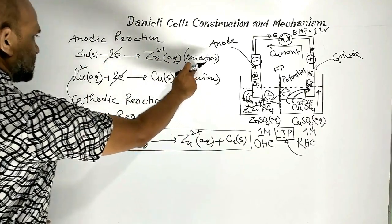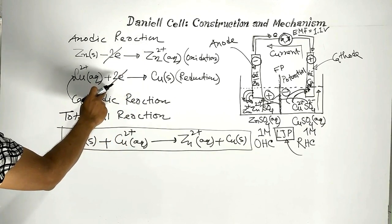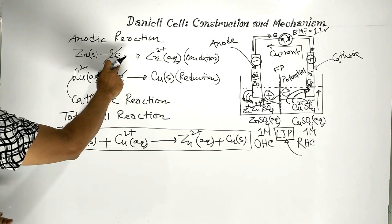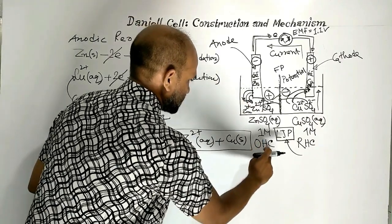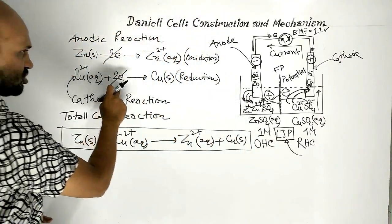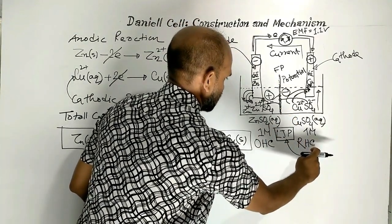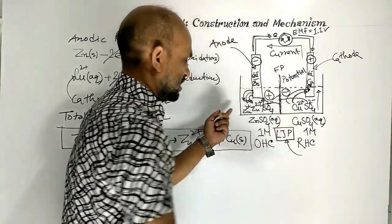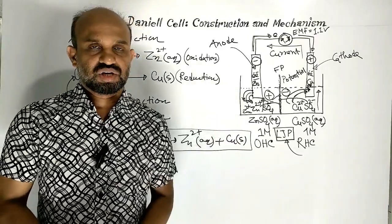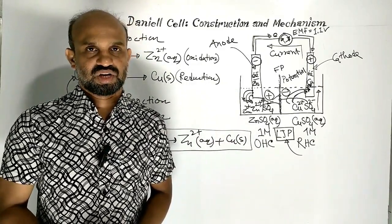This oxidation reaction is called the oxidation half reaction, and this reduction reaction is called the reduction half reaction. The oxidation half reaction occurs in the oxidation half cell, and the reduction half reaction occurs in the reduction half cell. Together these make up the complete electrochemical cell, which is a Daniel cell — an example of an electrochemical cell.